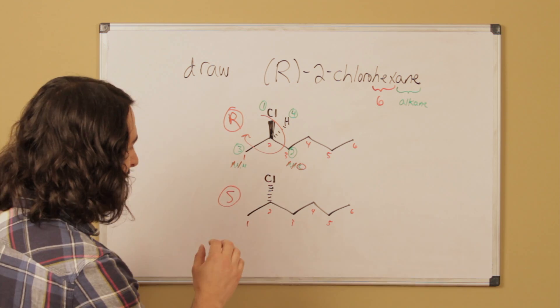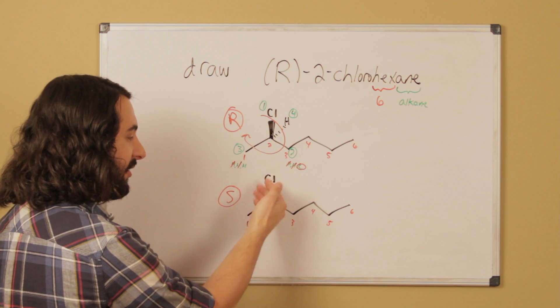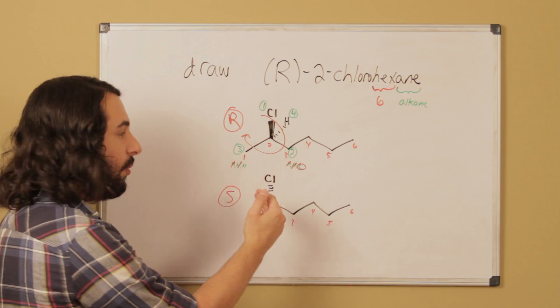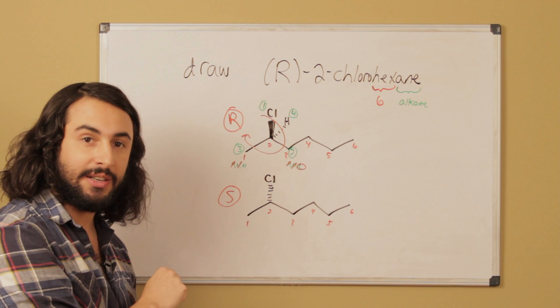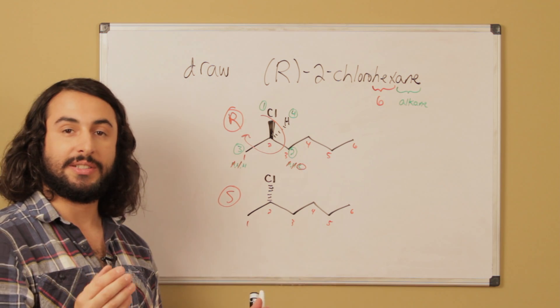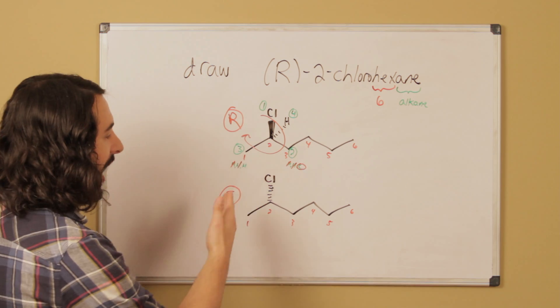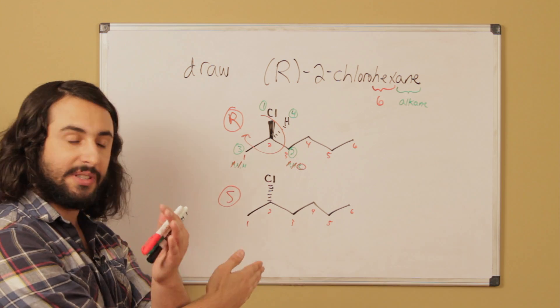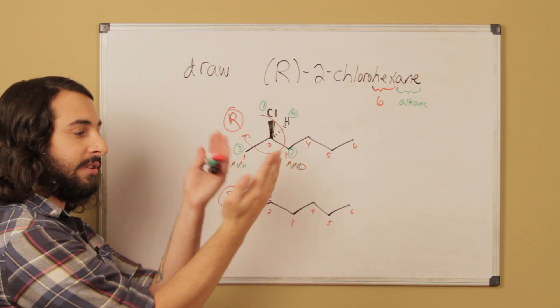Instead we could pretend that this is a wedge. If we pretend that this is a wedge, we're going to assess that as R the way we just did. But then you have to reverse it to S, because any time we swap two groups—as we would the chlorine and the hydrogen, swapping them to make the hydrogen being away from us—you are inverting the stereocenter.